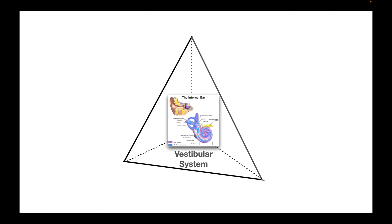On the back corner we have information coming from your vestibular system, your inner ear. We've got things in there like your semicircular canals and your otoliths. Basically what they do is tell your brain when your head is moving in angular rotation and if you're moving in translation — straight forward and back, side to side, up and down. It's also how our brain knows where our head is in relation to gravity.